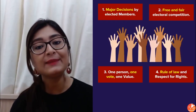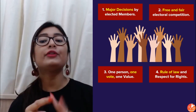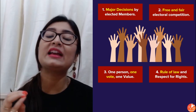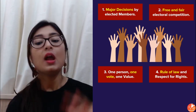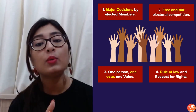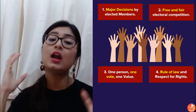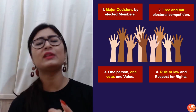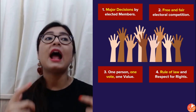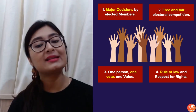Let's quickly summarize the features of democracy. First: major decisions must be taken by elected members — the final power must be in their hands. Second: free and fair electoral competition — everyone gets to vote, people have proper choices, and no malpractice is done. Third: one person, one vote, one value — every citizen gets one vote and all votes are of equal value, giving political equality. Fourth: rule of law and respect for rights — just because a government is elected does not give them the right to do whatever they want. They must abide by the constitution, not amend it to suit themselves, and must respect the judiciary, which is supreme over all citizens, legislature, and executive.